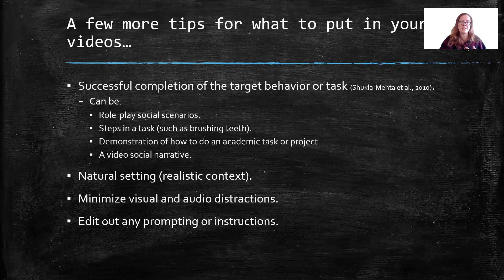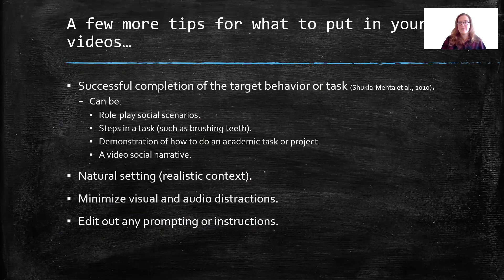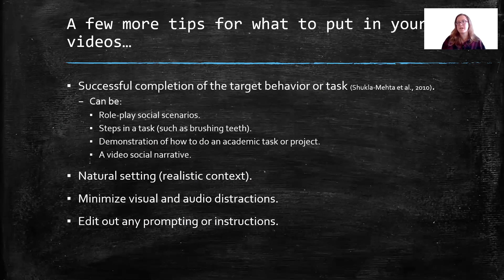When making your video, use a natural setting — a realistic context. If the background is important, try to make it natural; for example, a video about grocery shopping would be best filmed in a grocery store. Minimize visual and audio distractions, like we saw in the coloring example — very zoomed in, not a lot going on. I like to mute the sound if there's no talking, to reduce audio distractions. And if you needed to provide any prompting or instructions during filming, edit those out so the student sees only the correct behavior with no prompts.